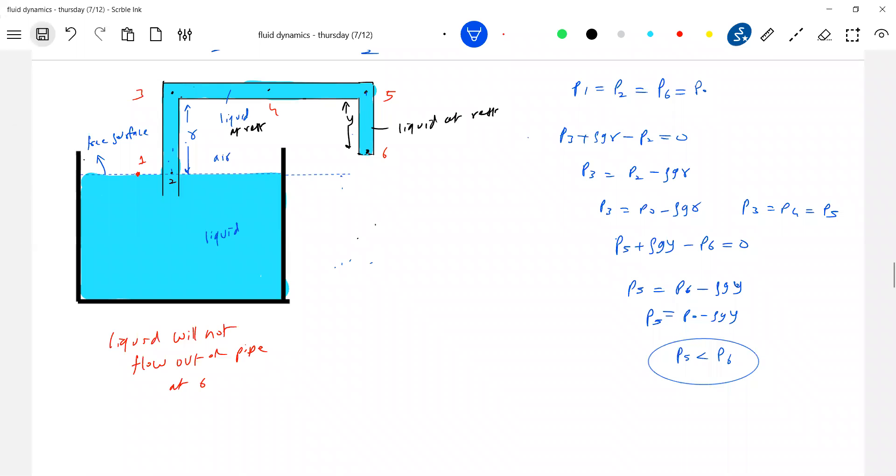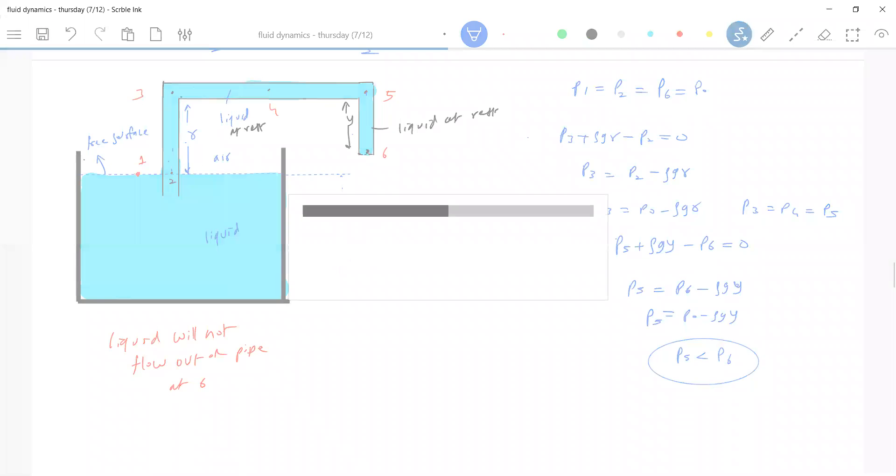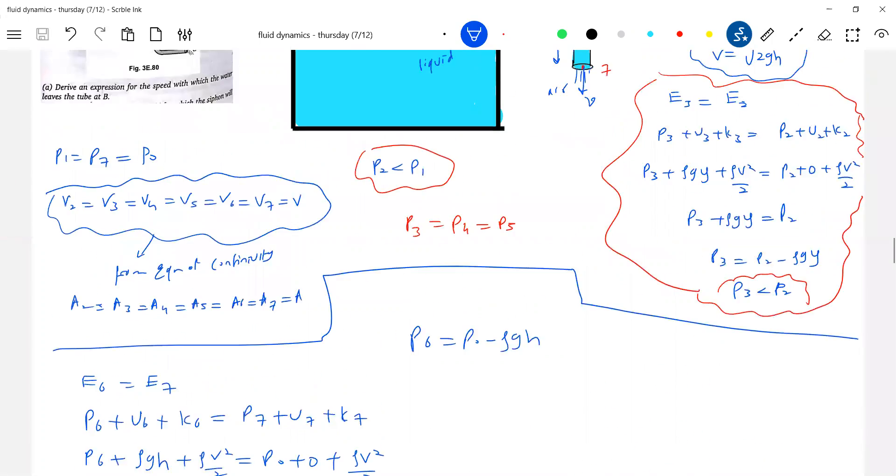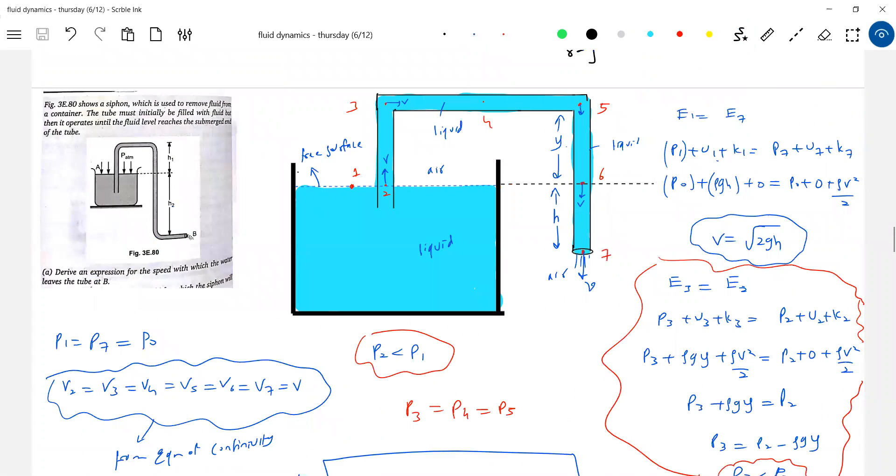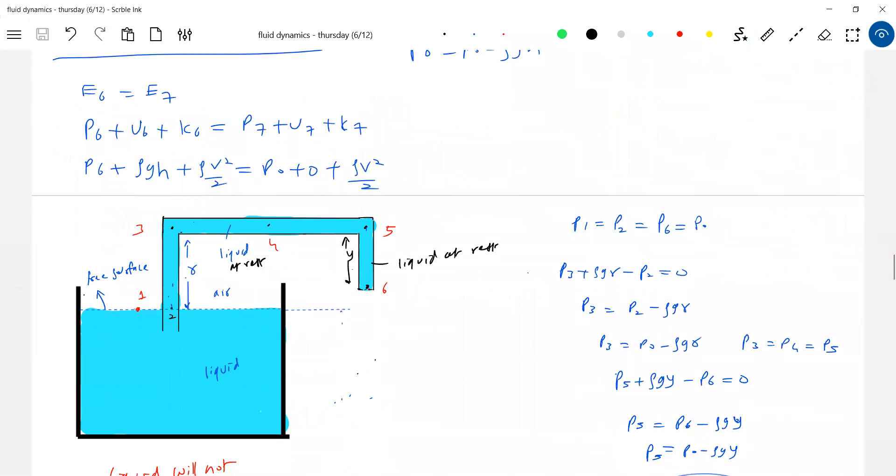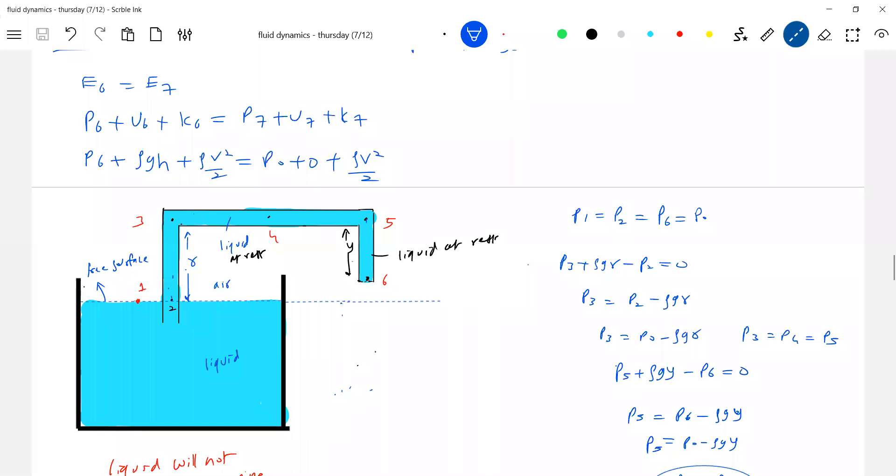So tell me, for the siphon to work, what we should do? What is the necessary condition? This H should be greater than zero. If the end of this pipe lies above the level of liquid in the tank, the liquid will not emerge out. That was the only reason. Look at the mouth of the siphon. We call this usually mouth. If the mouth of the siphon lies above the level of liquid, then liquid will not emerge out from the siphon. If the mouth of the siphon lies below the level of liquid in the tank, the liquid emerge out. With what speed it emerge out? Root 2 gh.